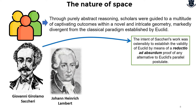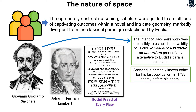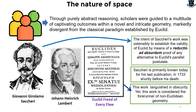Saccheri is primarily known for his last publication in 1733, shortly before his death: Euclid Freed of Every Flaw. This work contains certain obscurities but was later clarified by Eugenio Beltrami, and is considered one of the forerunners in the establishment of non-Euclidean geometry. The works of Saccheri and Lambert are definitely important in this historical development.